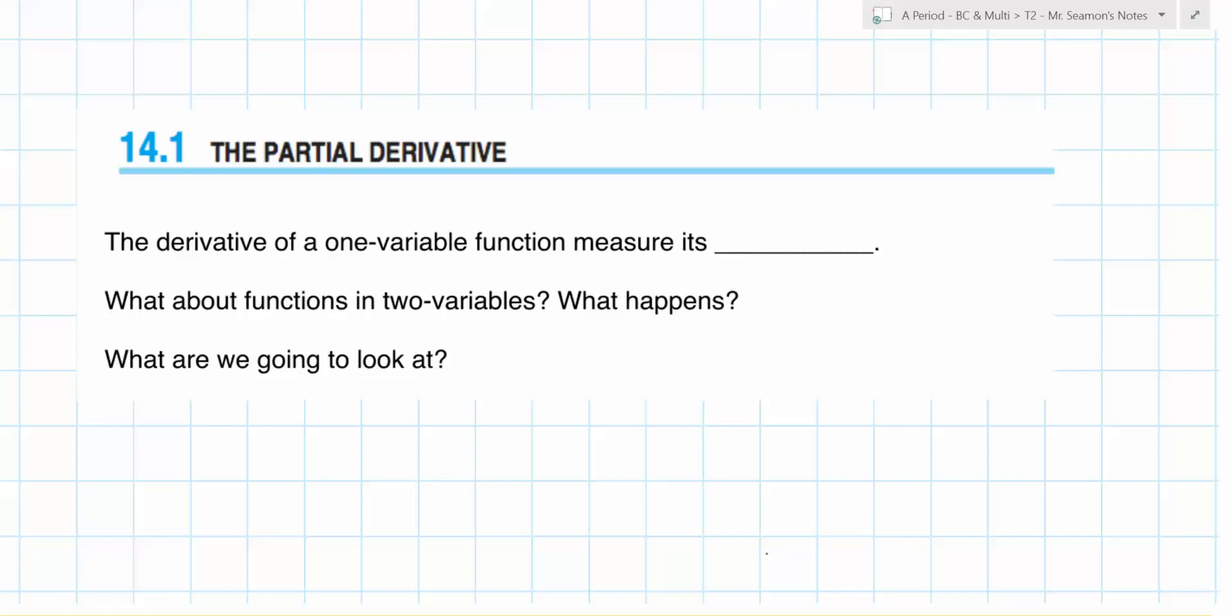Before, we had one variable that measures the rate of change. Is this still a rate of change? Yes. But if you had a specific point, before it was what happens as x increases? But now what do we have? What happens as x increases and what happens as y increases?